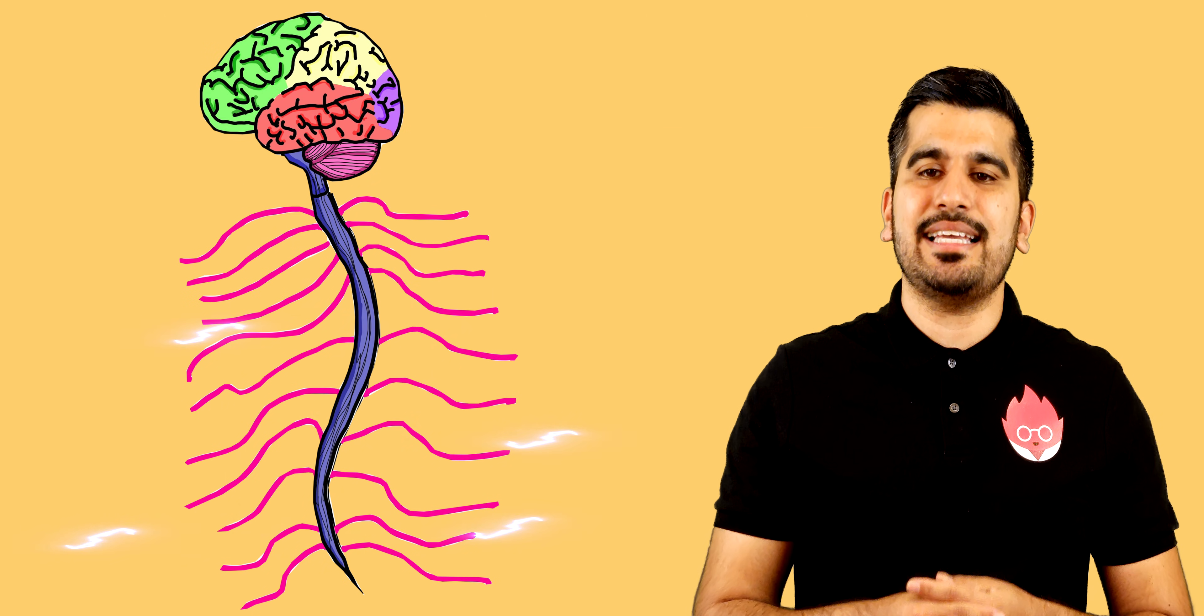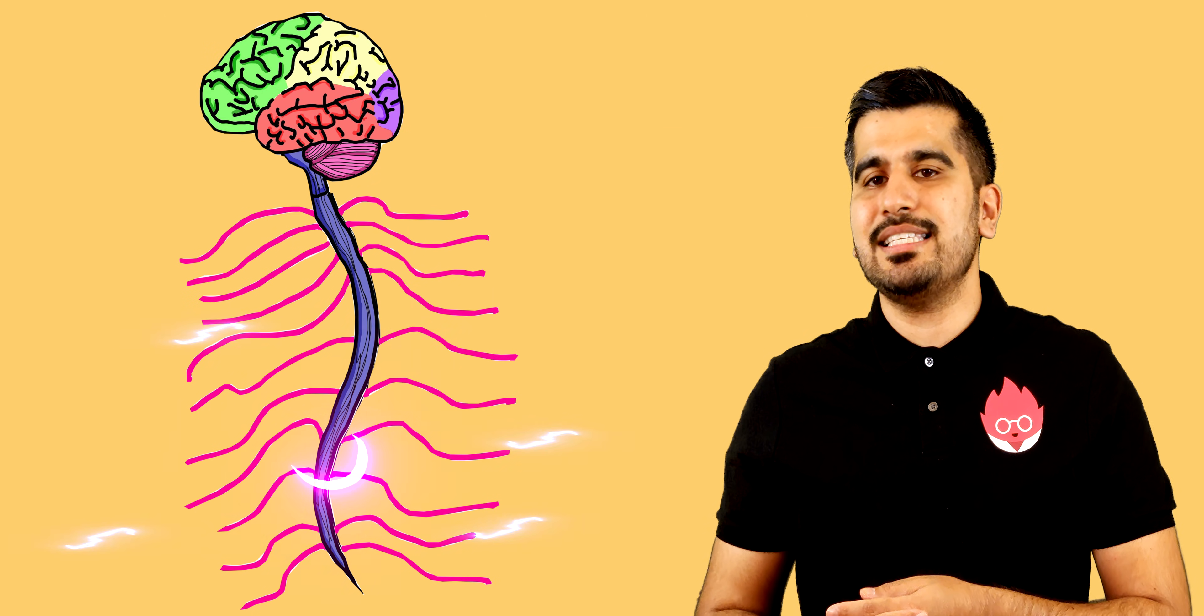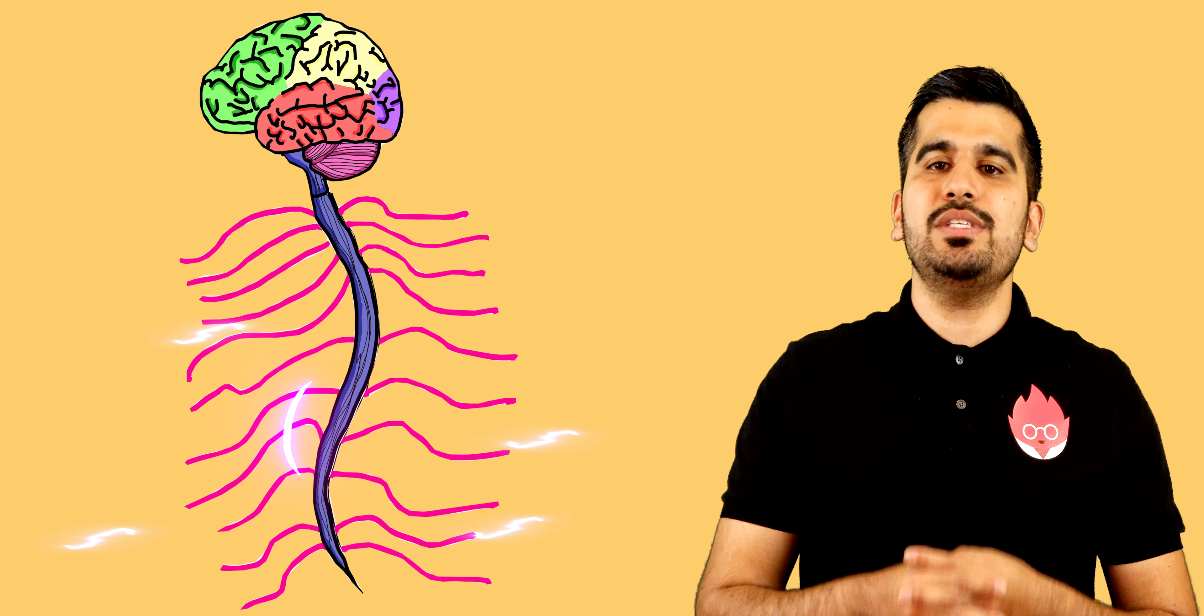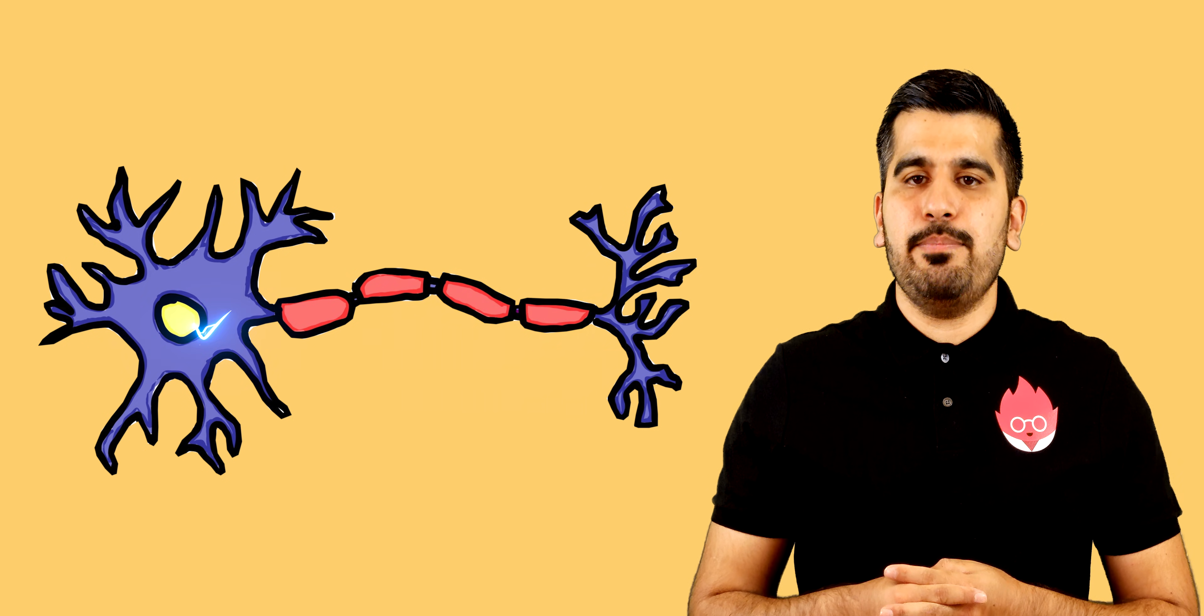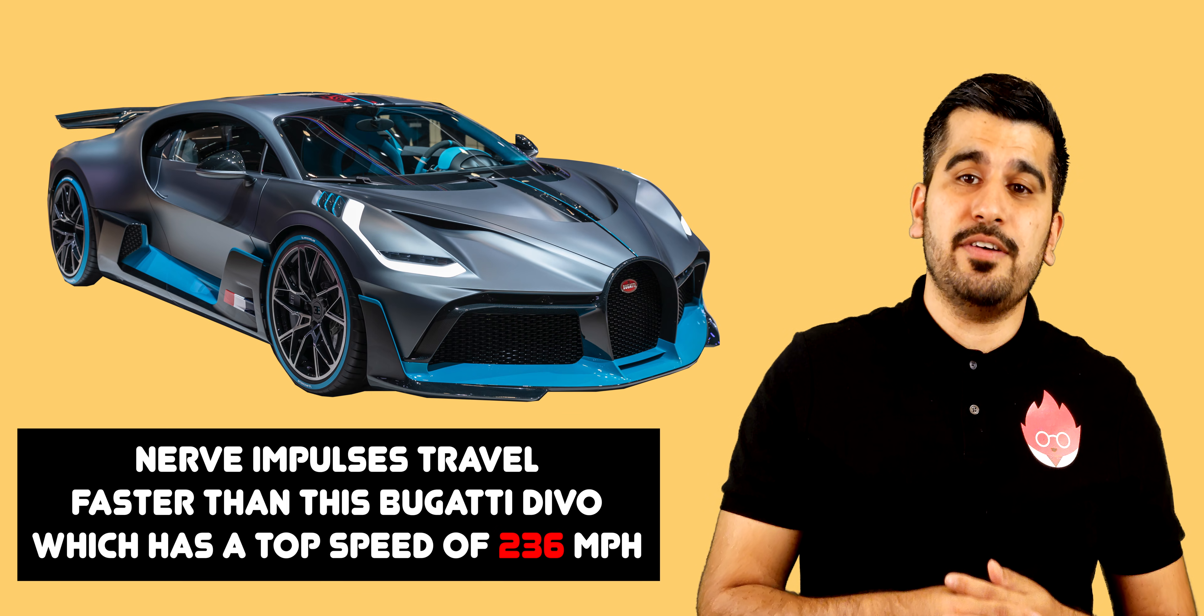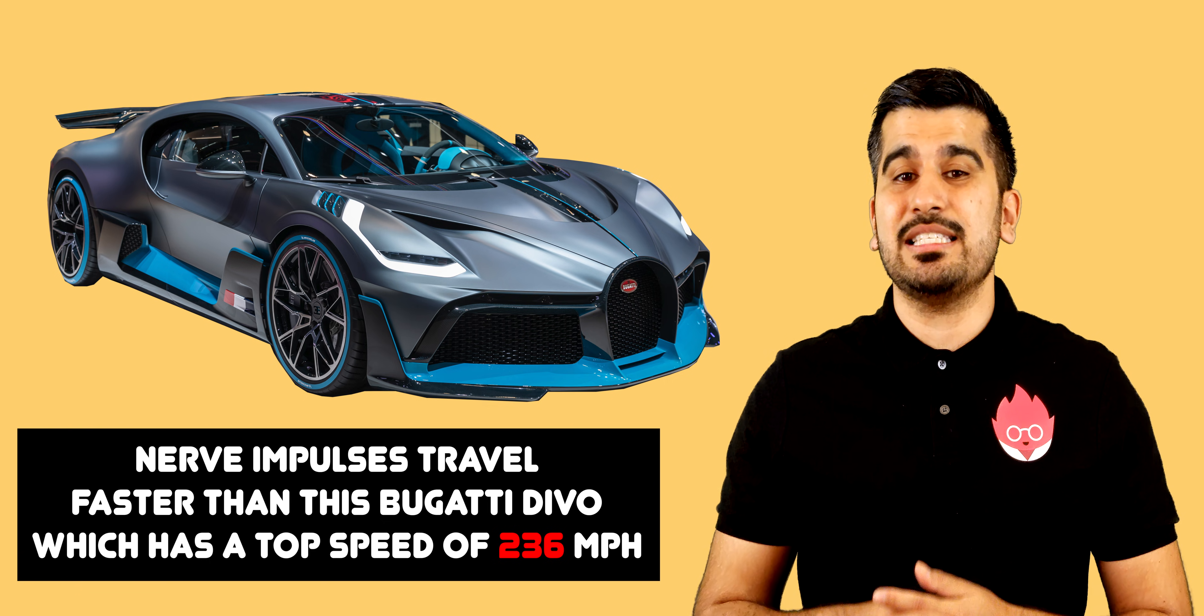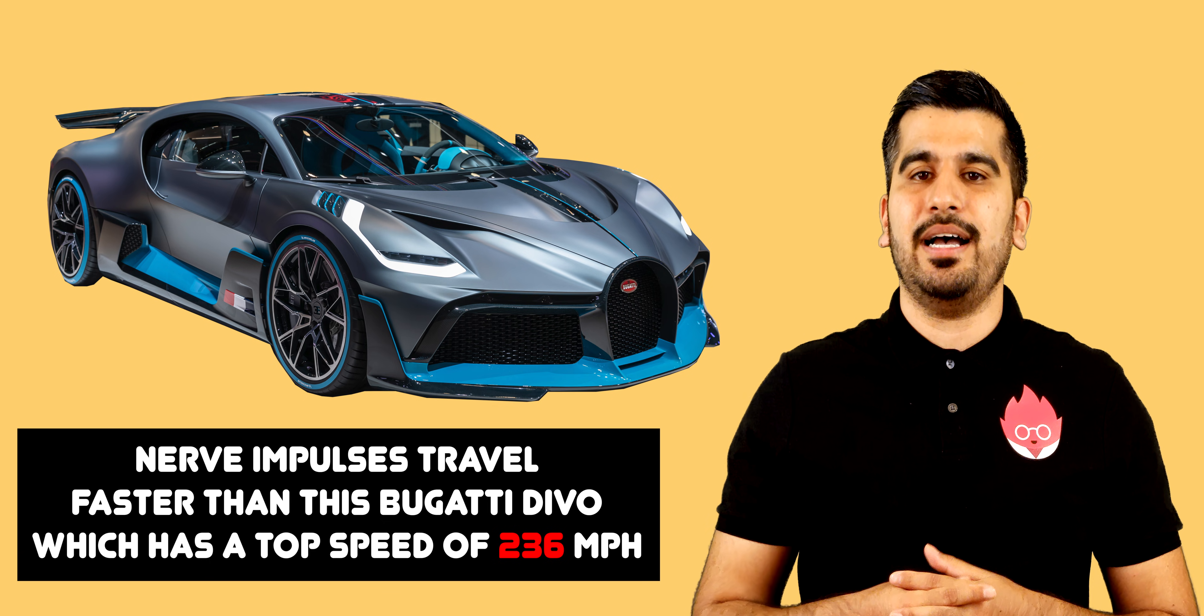Information needs to be sent quickly and so your nervous system is adapted to do this by using specialized cells called neurons. These send information by electrical impulses. The fastest speed for information to pass between neurons is about 250 miles per hour.